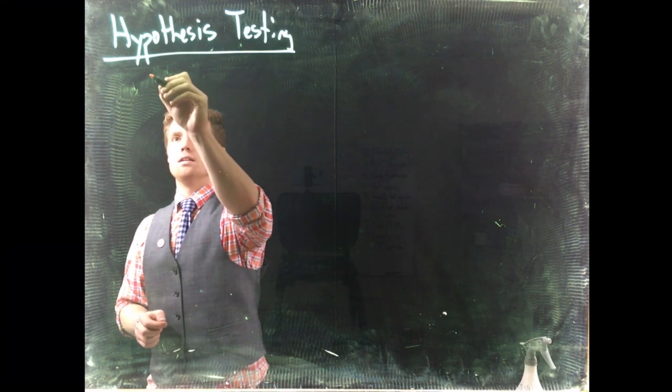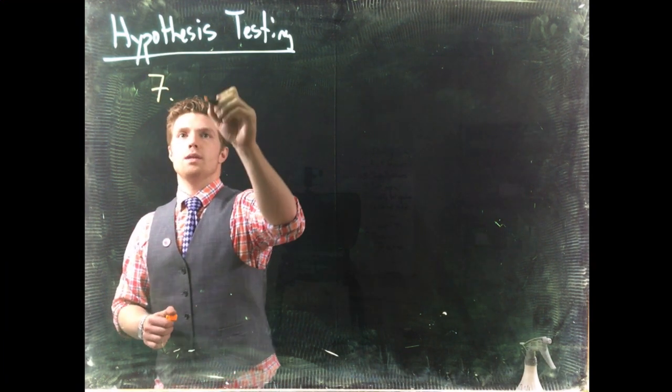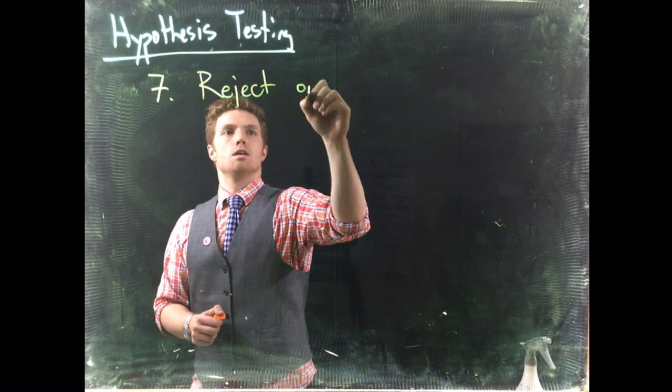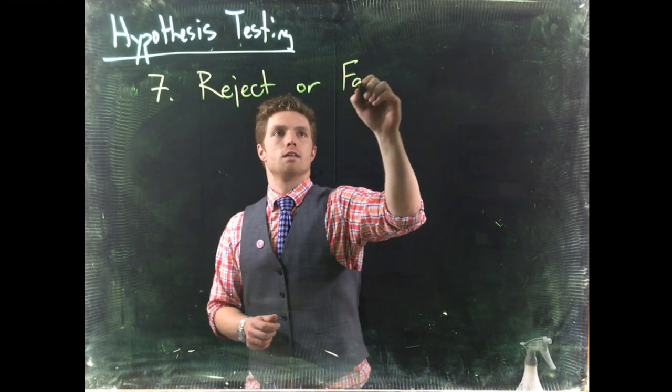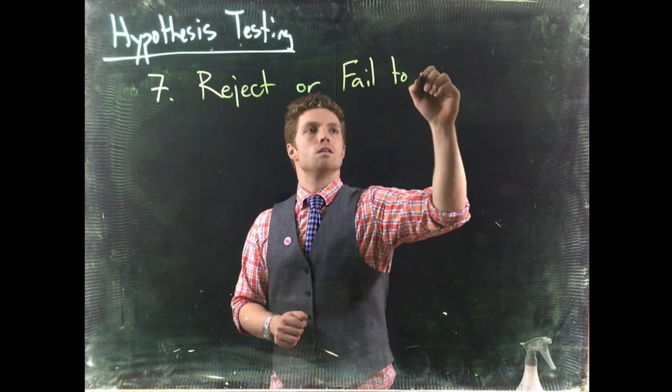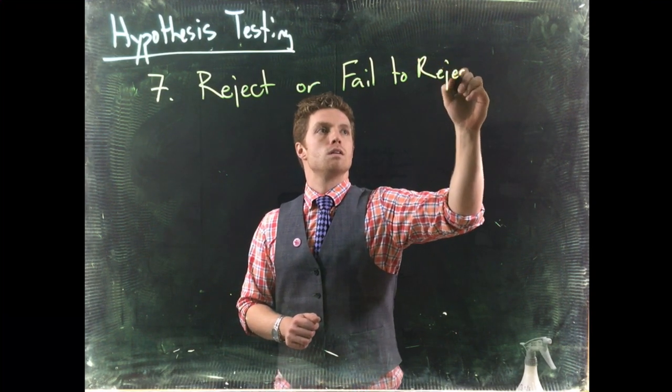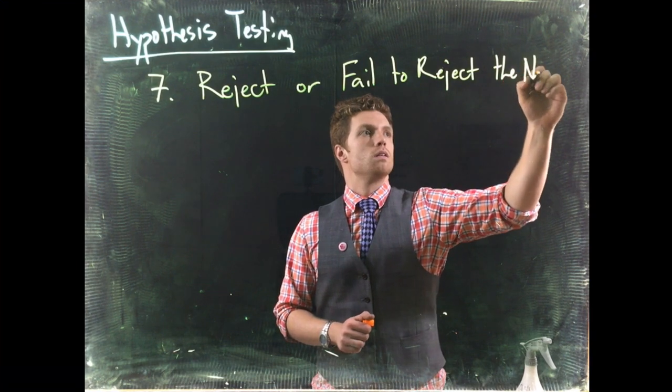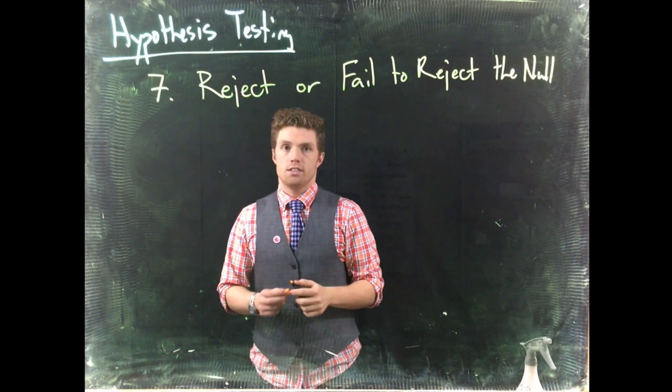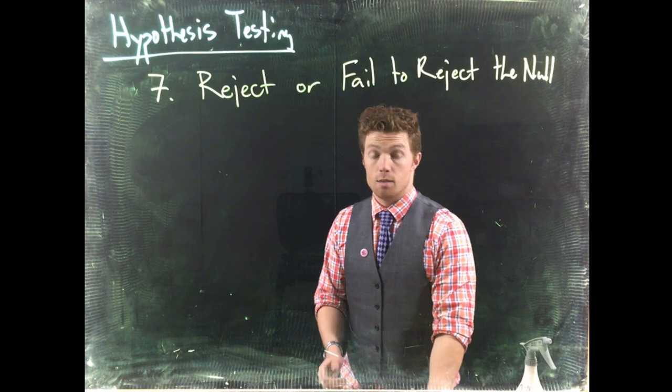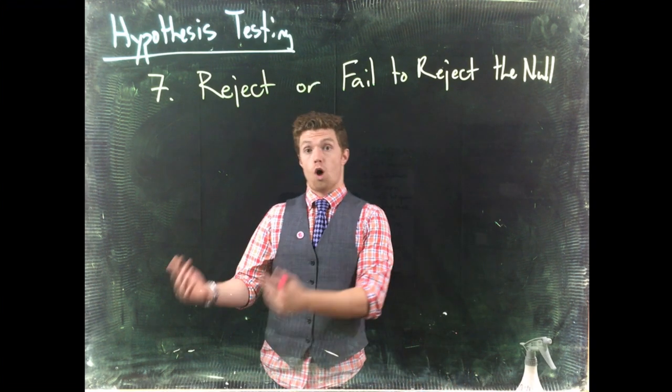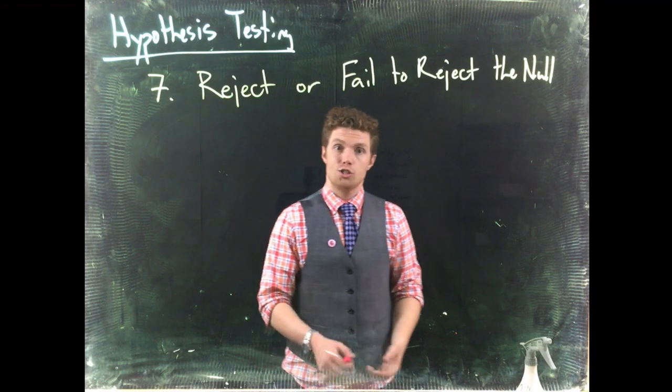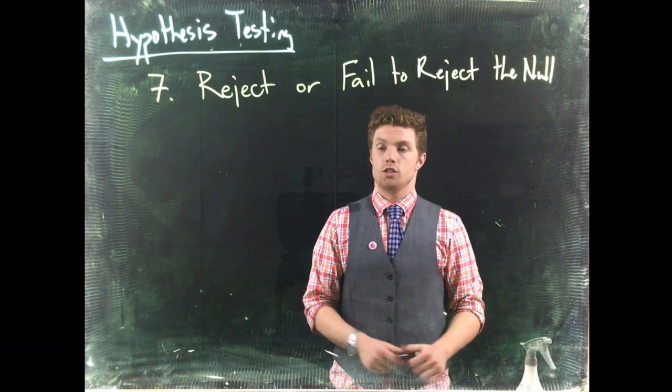Okay, so step 7 we need to either reject or fail to reject the null. So when we do our hypothesis testing we are only collecting data to either say that the baseline assumption is wrong or that we didn't collect enough data to show that the baseline definition is wrong.